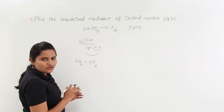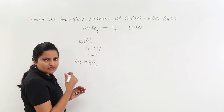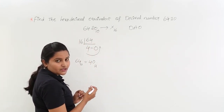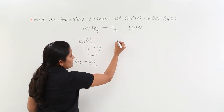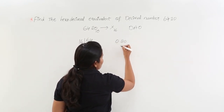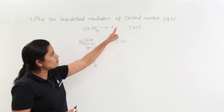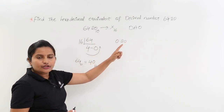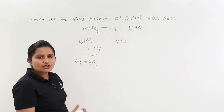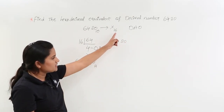That 4 and 0 gives the hexadecimal equivalent of decimal 64, which is 40. But the problem is not yet complete. We also have the decimal point digits — 0.20 is there. To convert 0.2 into hexadecimal, you need to multiply by the destination number system, which is 16.